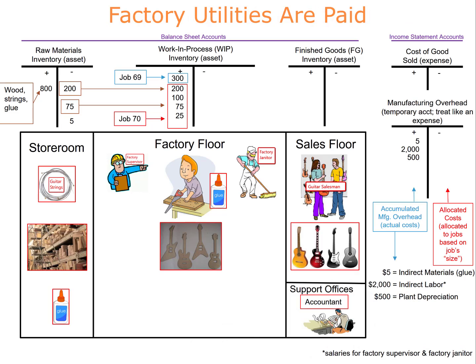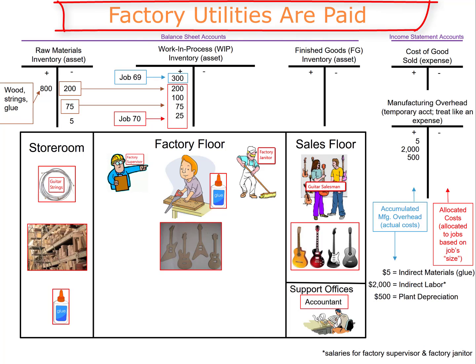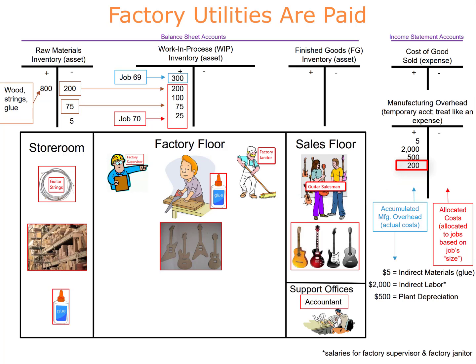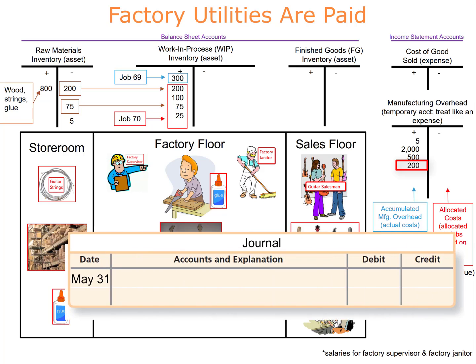At the end of the month, the $200 factory utility bill arrives. Since the bill is for the factory utilities, this will be a manufacturing overhead cost. The full journal entry debits manufacturing overhead for $200 and credits cash for $200.